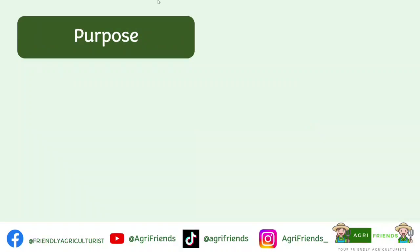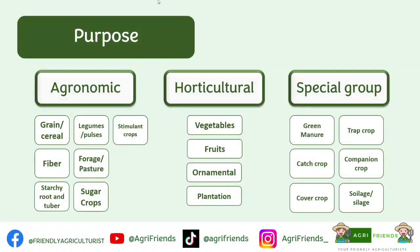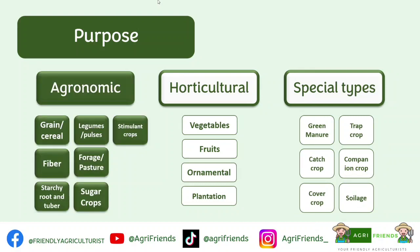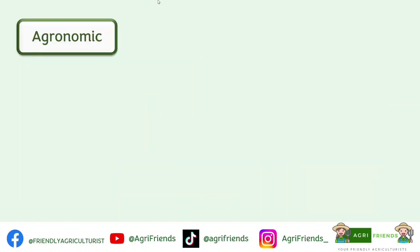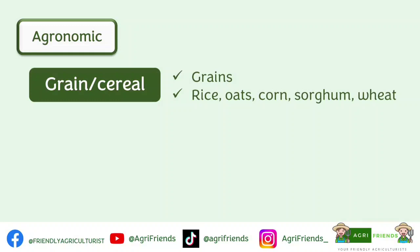Classification of crops according to purpose is further subdivided into three categories: agronomic, horticultural, and the special group. Under the agronomic category, first are cereal or grain crops — grown for their grains, with examples including rice, oats, corn, sorghum, and wheat.